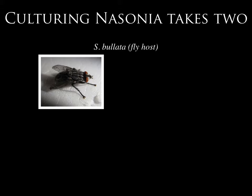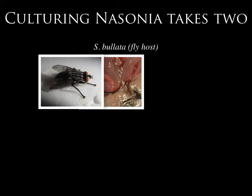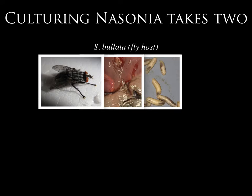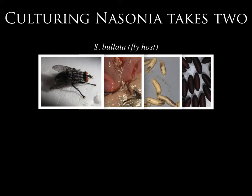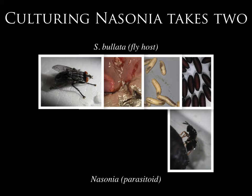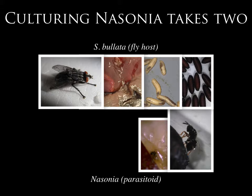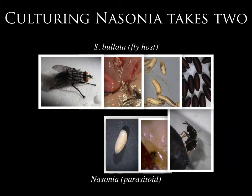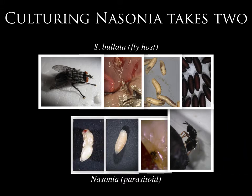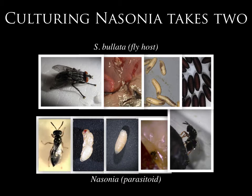The host is a fly, Sarcophagus bulata, which we rear in the lab on liver. Those eggs develop into maggots, maggots develop into pupae, and it's the pupal stage at which Nasonia will parasitize them. A mated female Nasonia oviposits into the puparium. The embryos deposited develop into larvae, consuming the host from outside in — an ectoparasitic strategy — leaving only the shell of the pupa behind. These eventually pupate and develop into adults. Generation time is about two weeks; we get about 40 offspring per host.